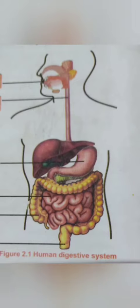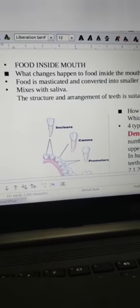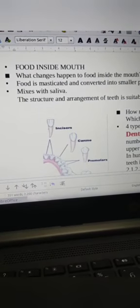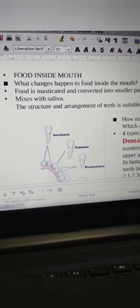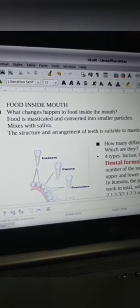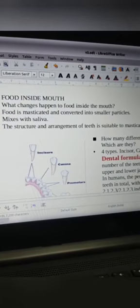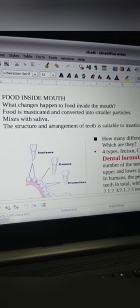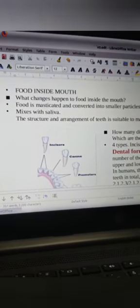First we study about food inside the mouth. What changes happen to food inside the mouth? Food is masticated and converted into smaller particles. Then it mixes with saliva. These are the two main functions of food inside the mouth.